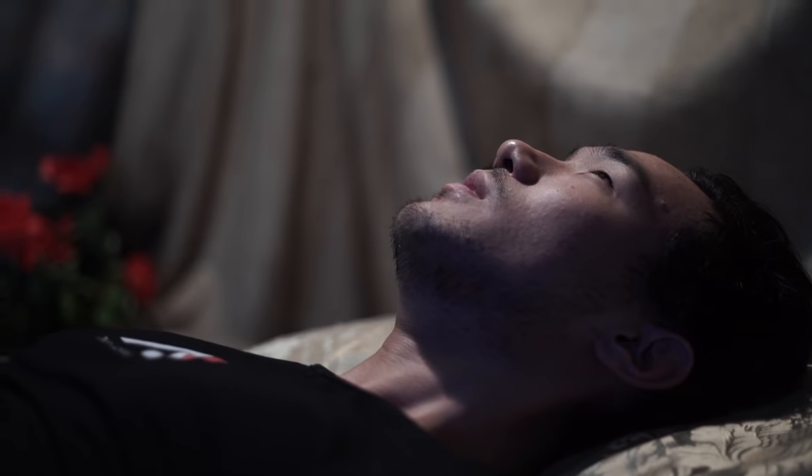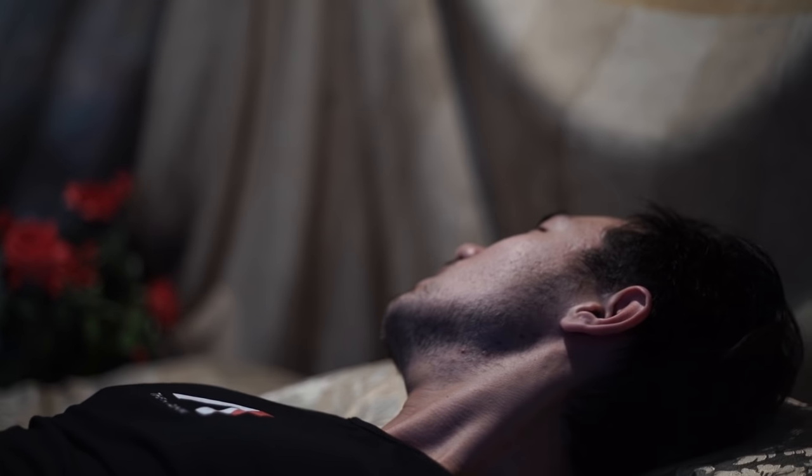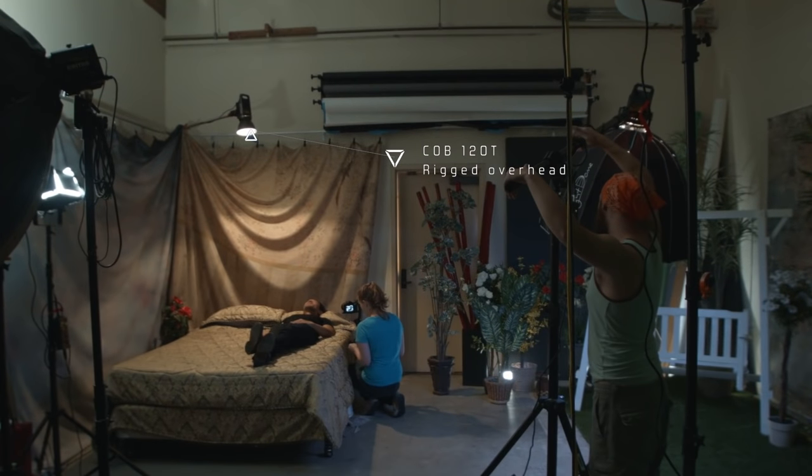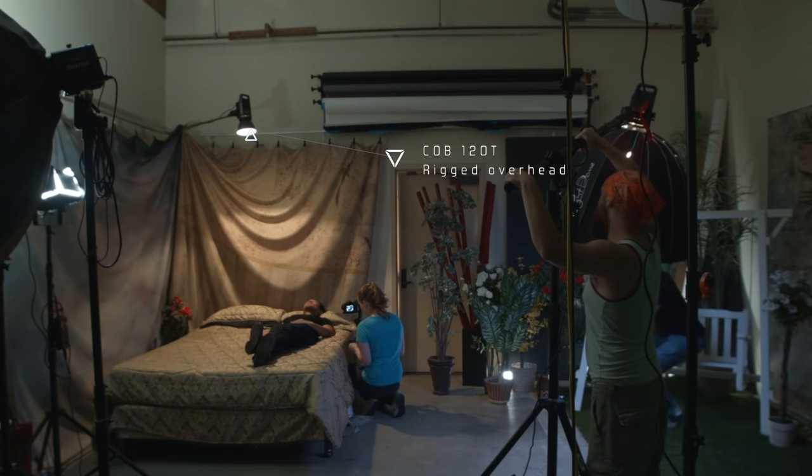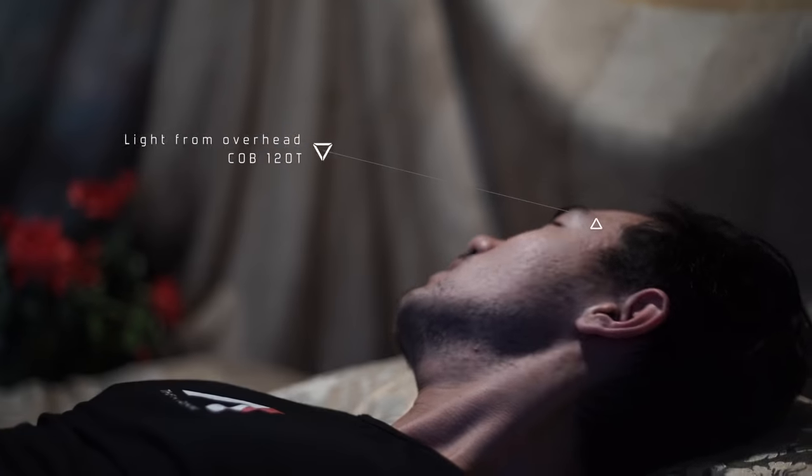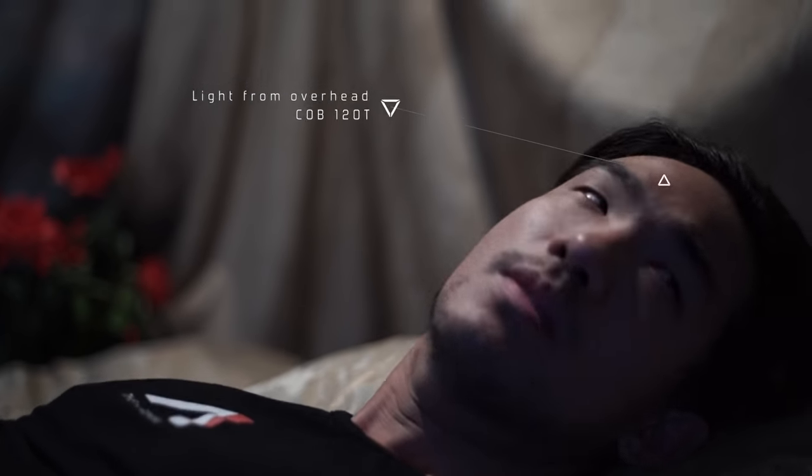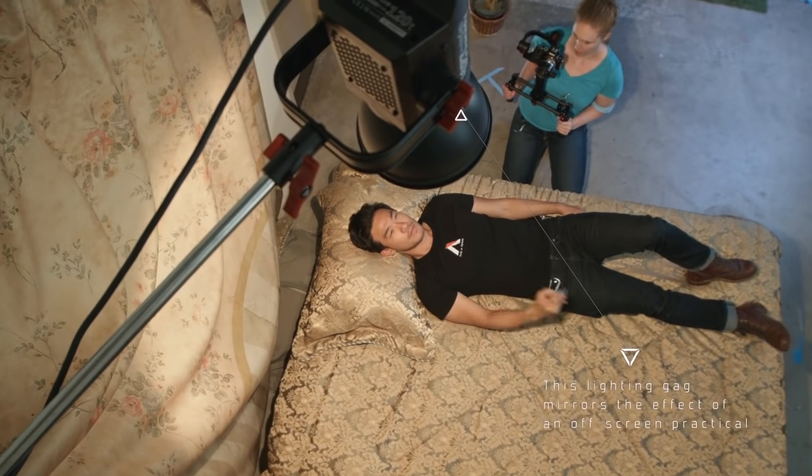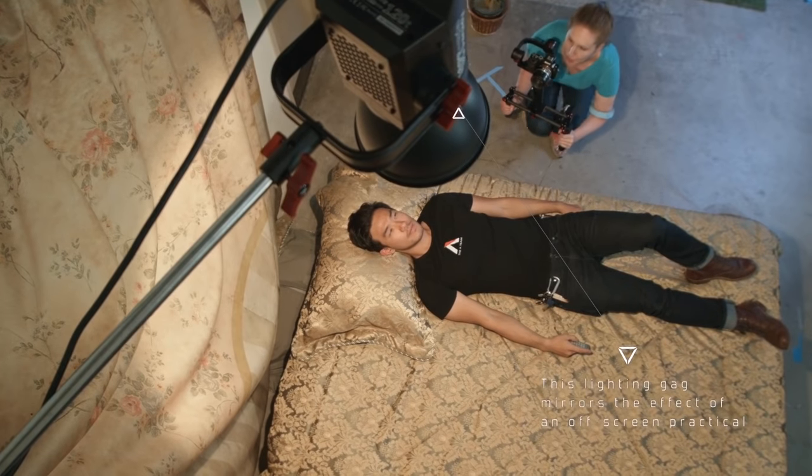The first thing that we used when we did our example is we had an off-camera practical. So even though you couldn't see where the practical was coming from, because the scenario had you in the bed and the light is tungsten, you infer that it's coming from some kind of reading light, floor light, some kind of off-camera source. And because we knew where the frame line was, we could easily rig from above without ever seeing the light.